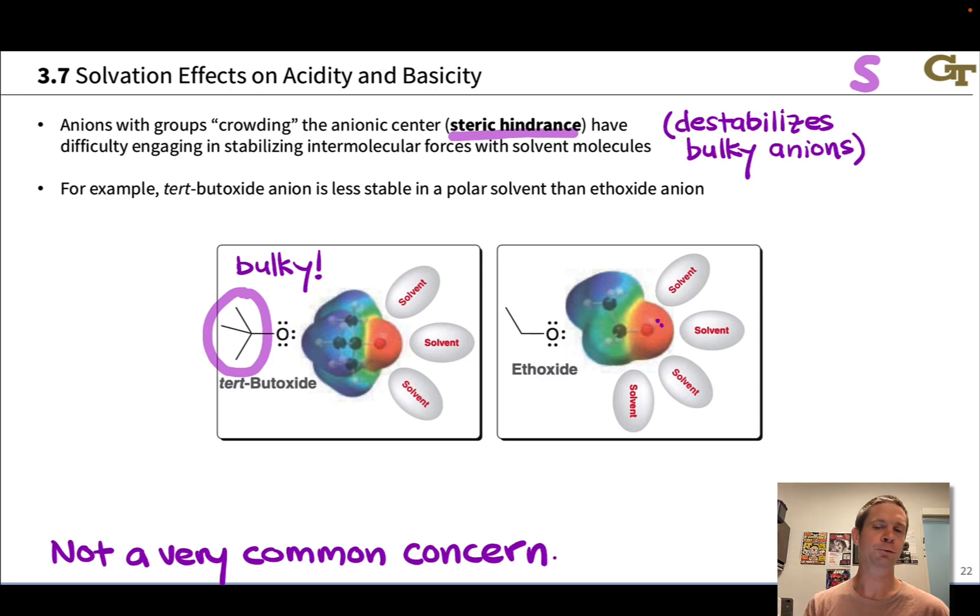Thinking about this in reactivity terms, we could reason that it's actually a little bit easier for tert-butoxide to donate a pair of electrons. It's easier for an acid, for instance, to find its way in here with fewer solvent molecules around. The negative charge, we might say, or the lone pair is a bit more naked, quote-unquote, pardon the metaphor there.